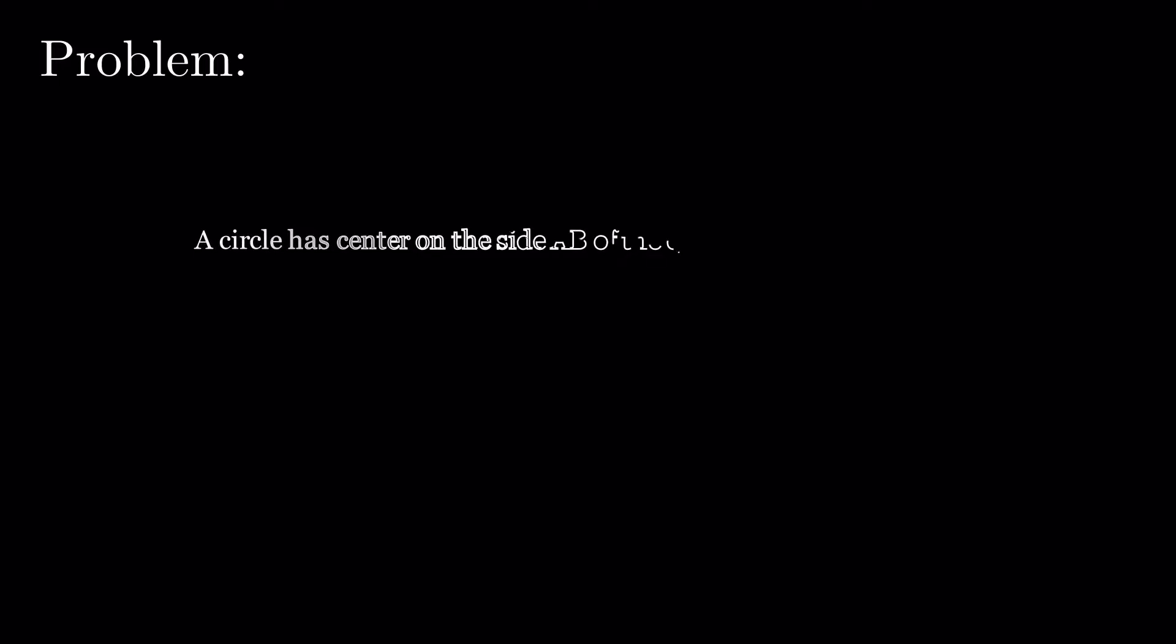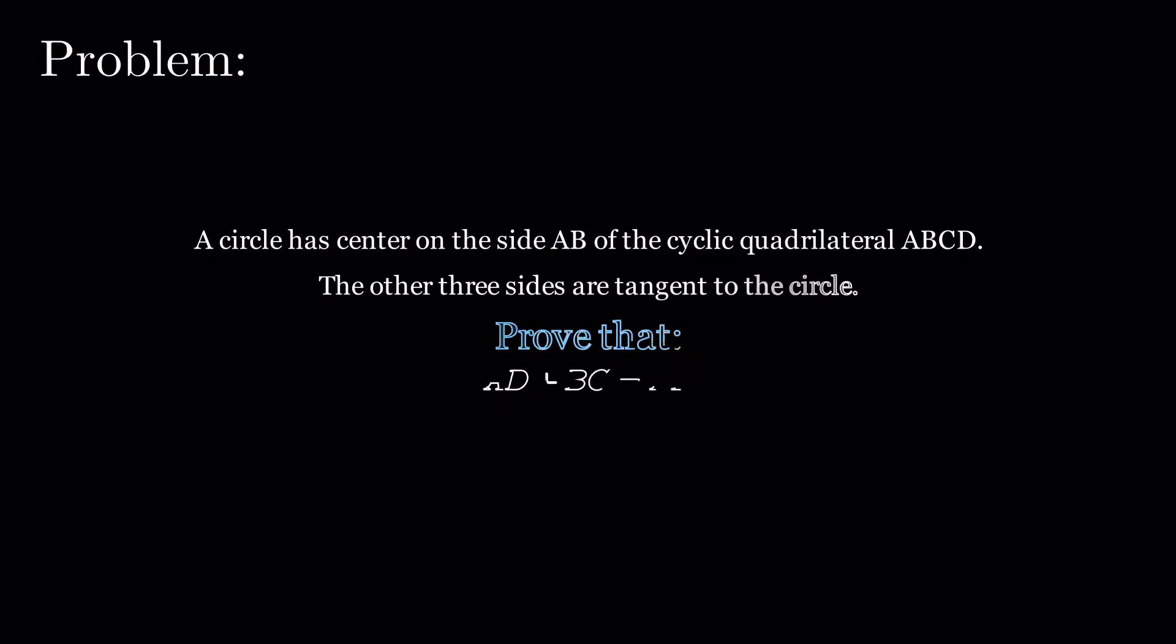A circle has its center on the side AB of the cyclic quadrilateral ABCD. The other three sides are tangent to the circle. Prove that AD plus BC equals AB.